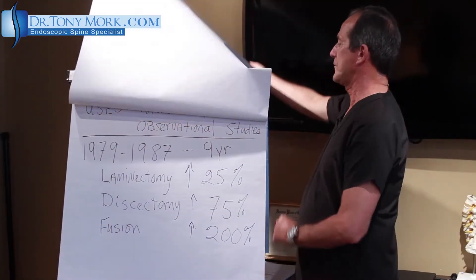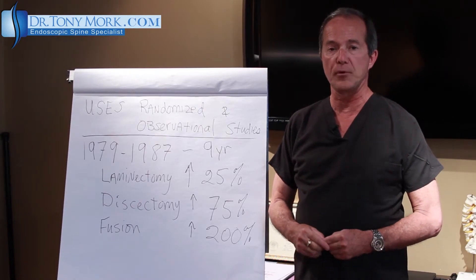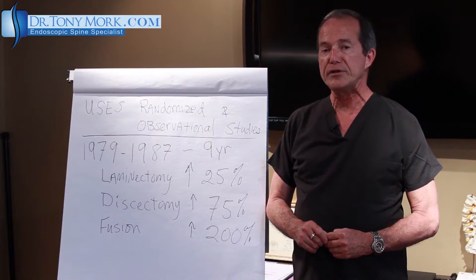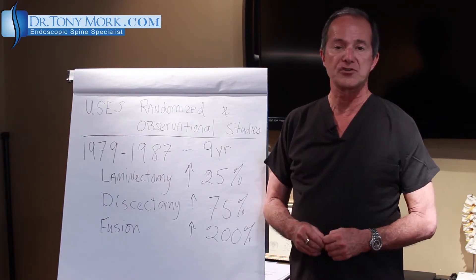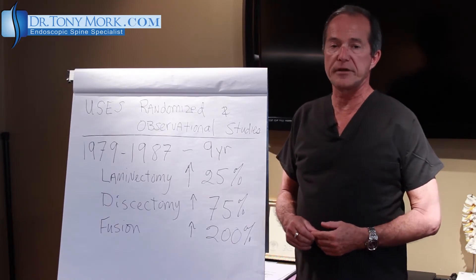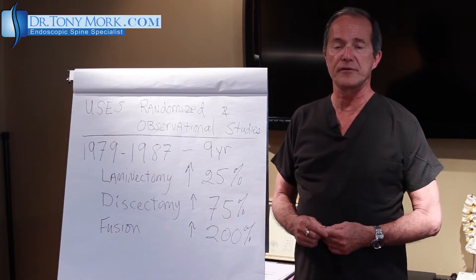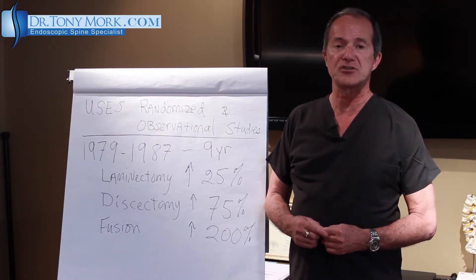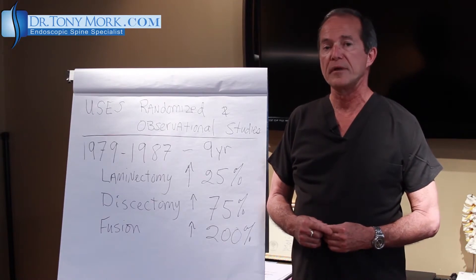SPORT data uses both randomized and observational types of studies. A randomized study would be a group of people with the same problem, assigned to either the surgical group or the non-surgical group — they would not have any choice in the matter. Observational studies are ones in which the physician could actually influence the direction of treatment — patients may have started with surgery but been persuaded to go conservative, or started conservative and then moved to surgical.